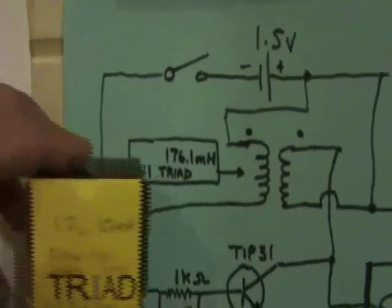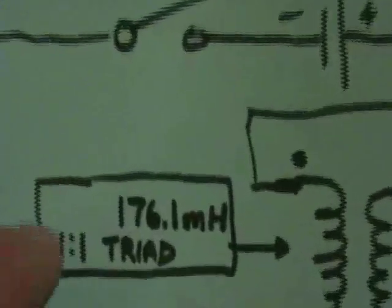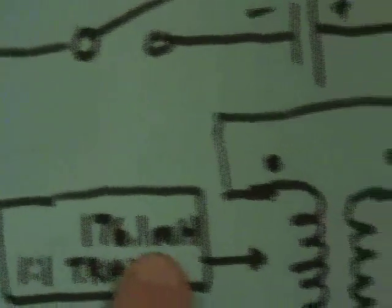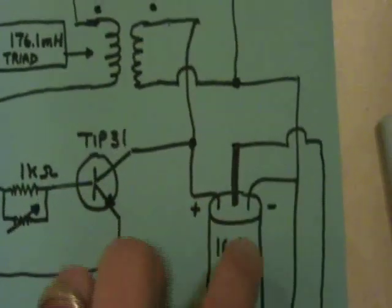So I bought an off-the-shelf Triad transformer, one-to-one, 176.10 millihenries. Then on the secondary side, just took it up to an auto-ignition coil that you can buy at any auto store. Pretty inexpensive. In fact, get the cheapest one you can find.